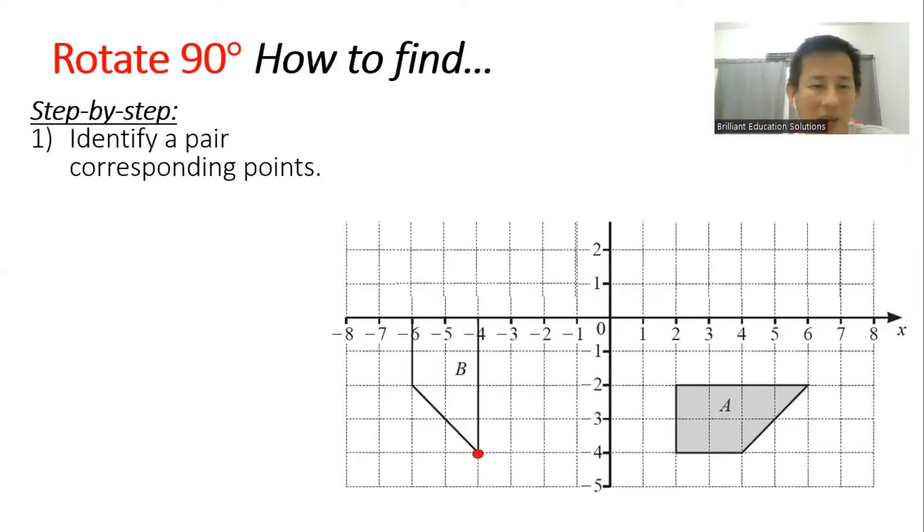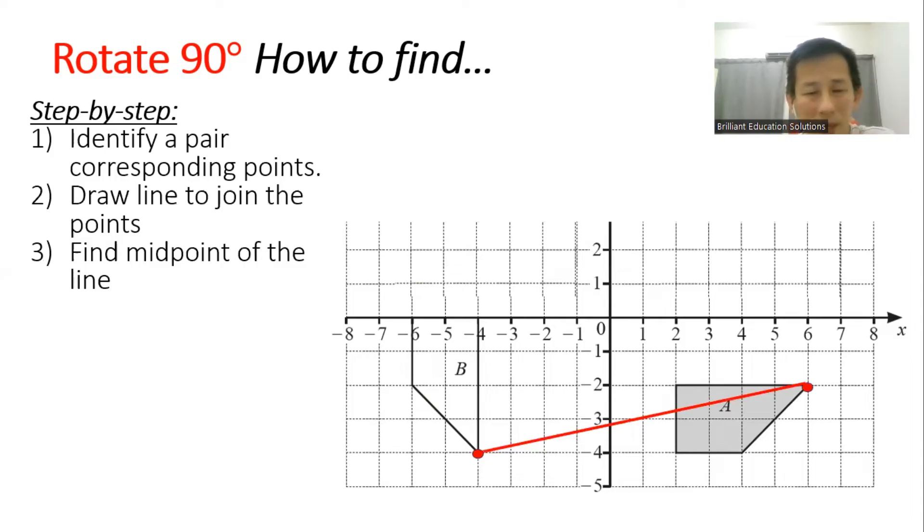You do the same: identify the corresponding pairs and draw the line. For 90 degrees, remember, if you can recall, you need to construct the perpendicular bisector.